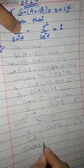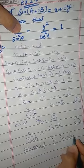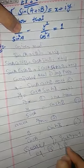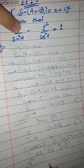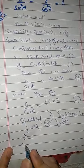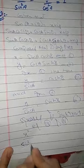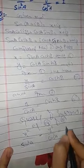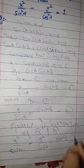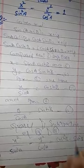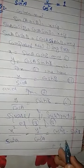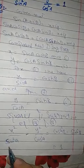Now, squaring and subtracting equation 3 and equation 4 — left side minus left side and right side minus right side — we get x² over sin²a minus y² over cos²a equals cosh²(b) minus sinh²(b), which is equal to 1.